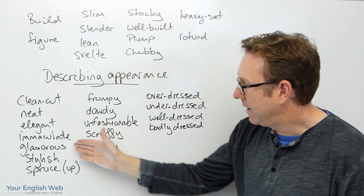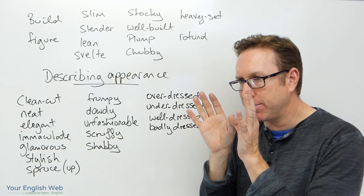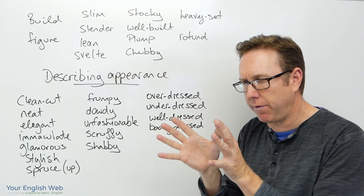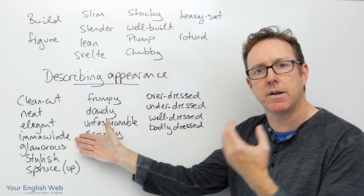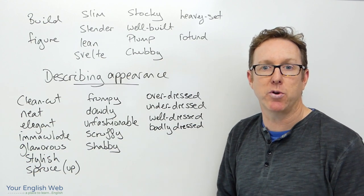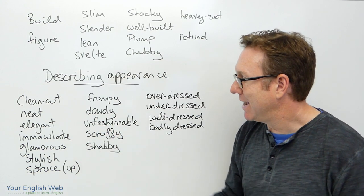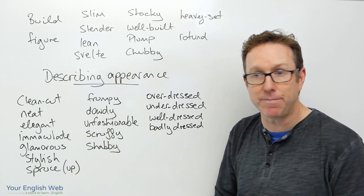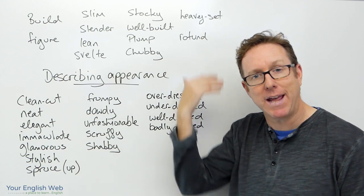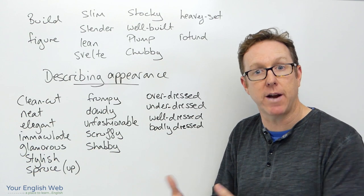Elegant, immaculate, and glamorous are further descriptors. Somebody can be elegant in the way that they dress — a very elegant dresser. Immaculate means everything is absolutely perfect, like a suit that's been to the dry cleaners — he's an immaculate dresser. Glamorous describes a very stylish person with fashion sense who knows how to wear their hair. Stylish refers to somebody who understands fashion and wears the latest styles — a modern hairstyle, the right clothes.